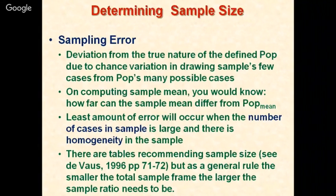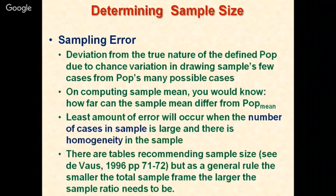Before determining the sample size, we need to understand the concept of sampling error. Sampling error is the deviation from the true nature of the defined population due to chance variation in drawing samples — a few cases — from populations with many possible cases. If we are not careful while using the sampling technique, then sampling error arises.